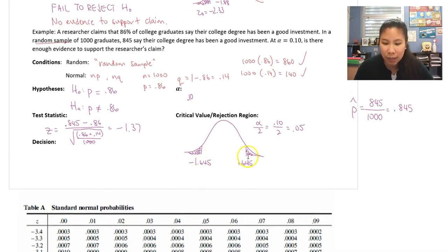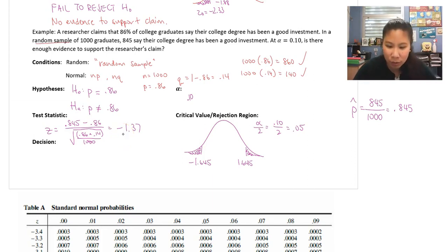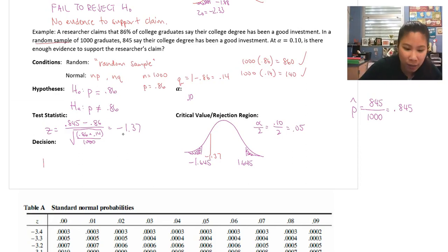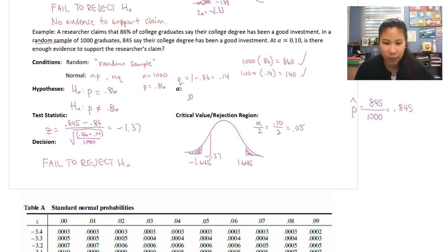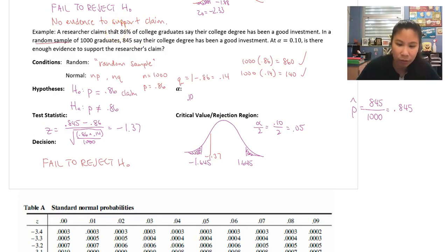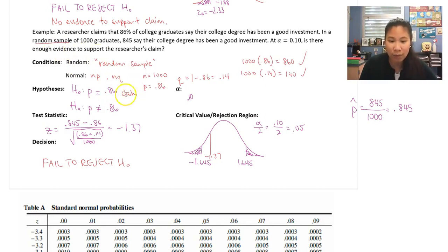Our test statistic of negative 1.37 falls between negative 1.645 and positive 1.645, so it does not get shaded — we fail to reject Ho. The claim was that it's 86%, which was Ho. Since we fail to reject Ho, we think Ho is true, so we do have enough evidence to support the claim.